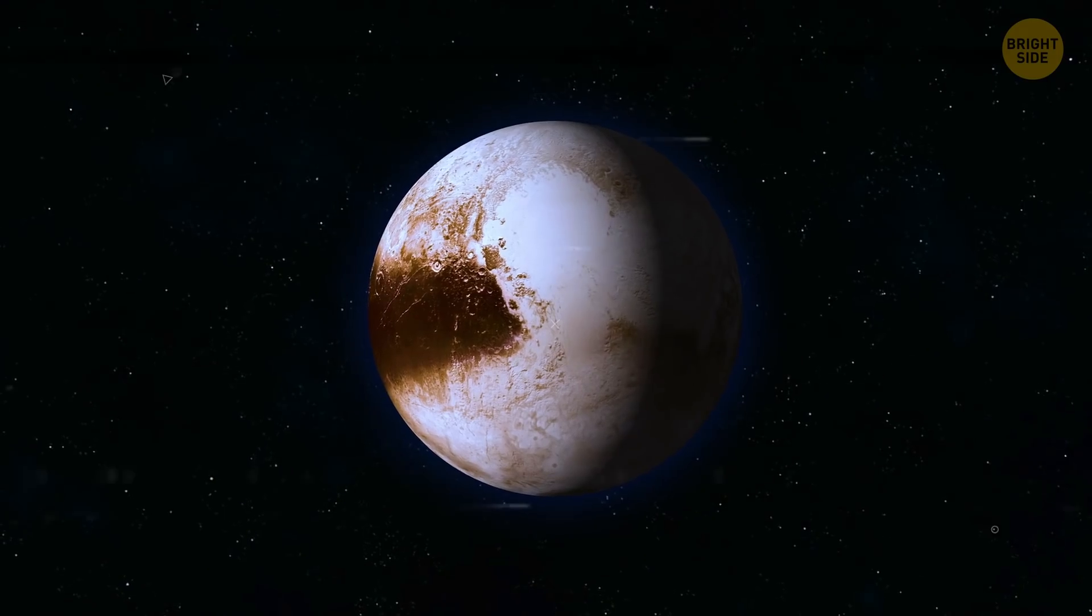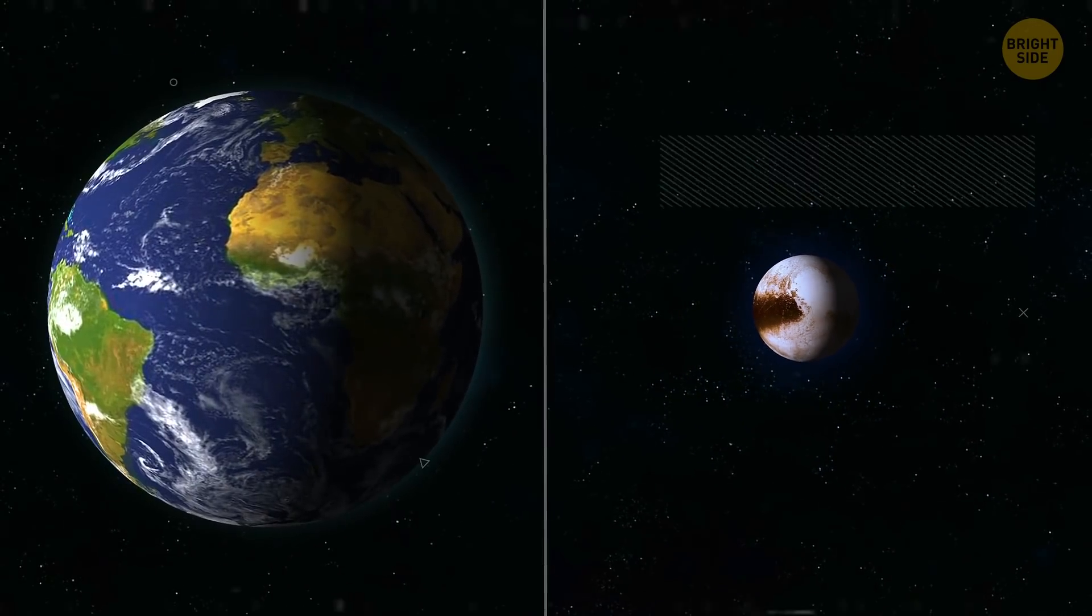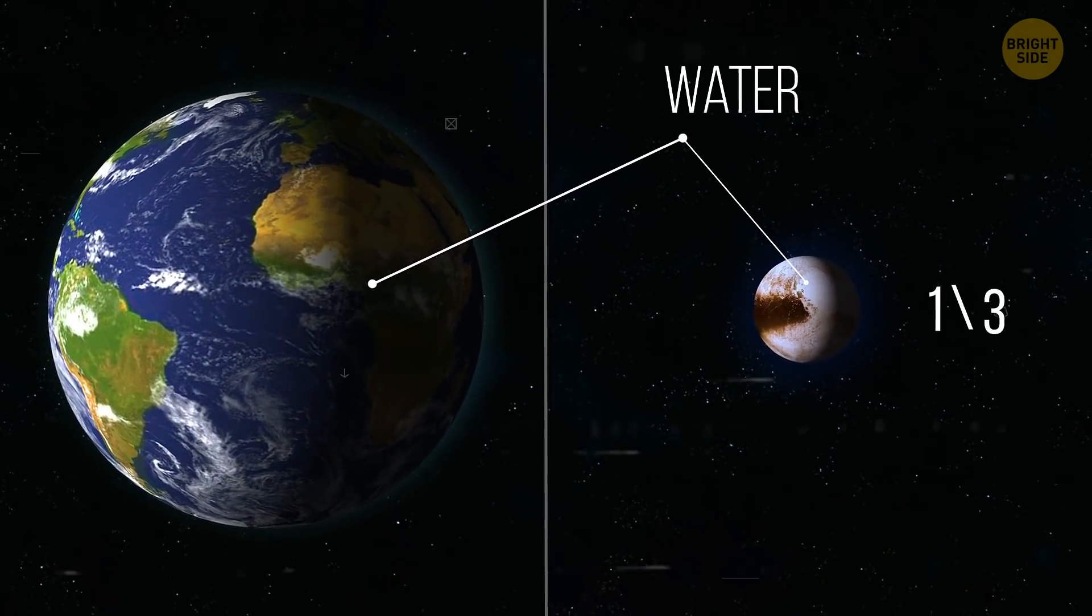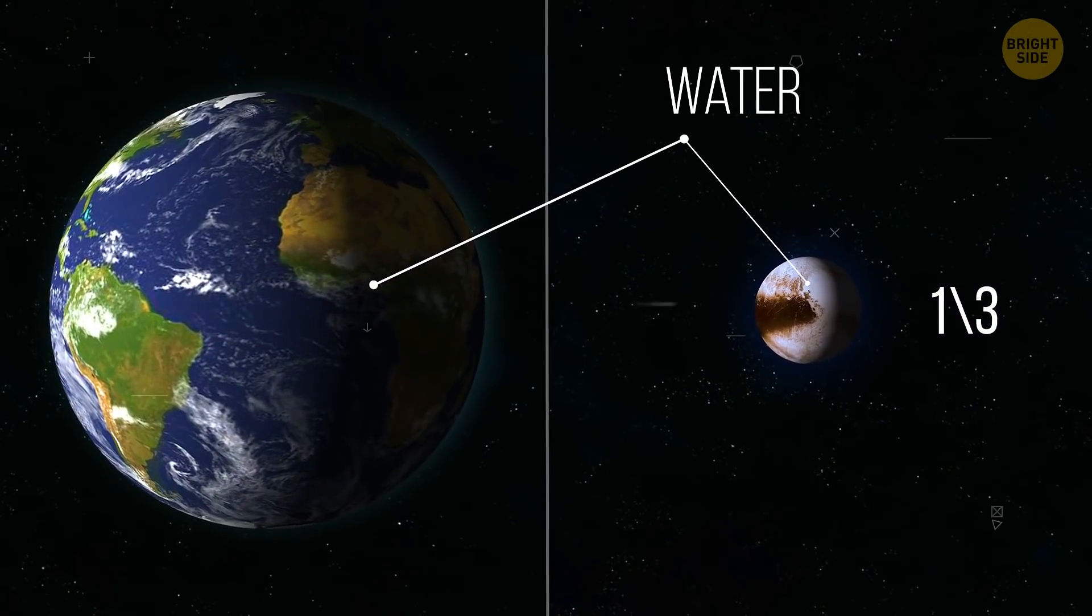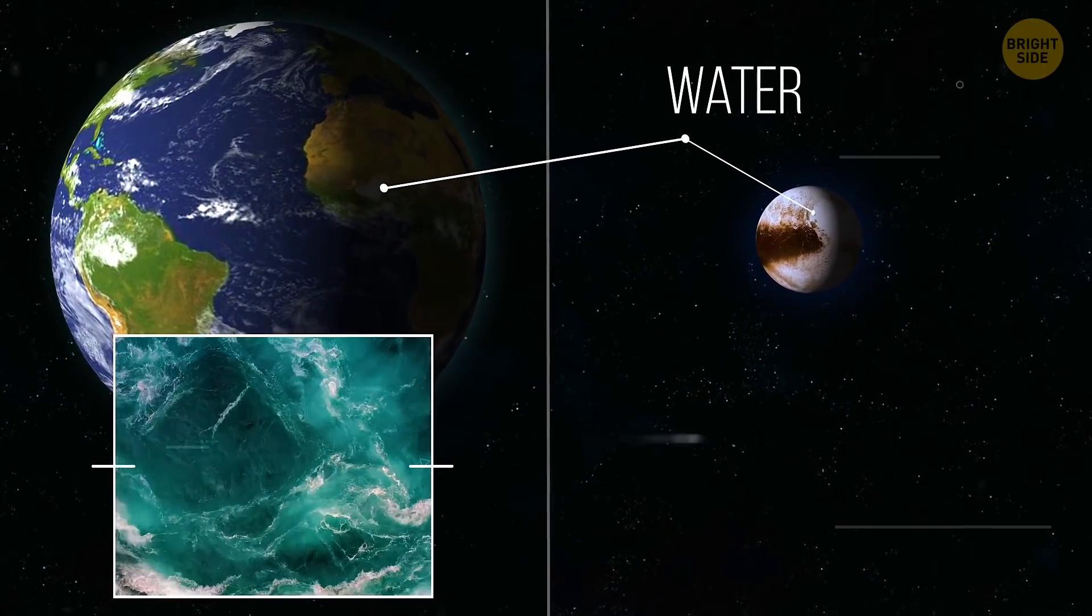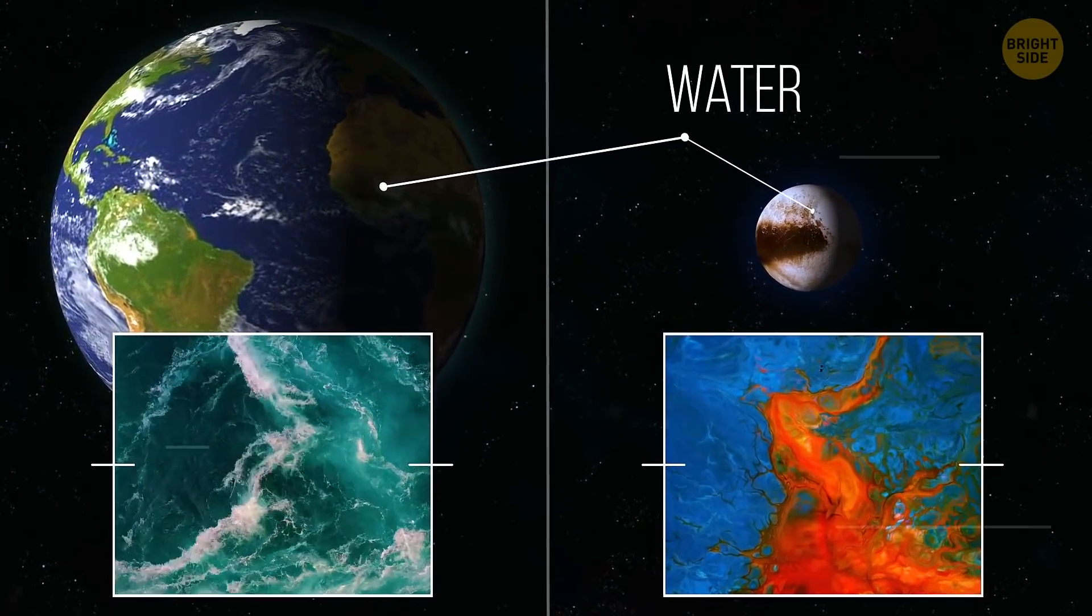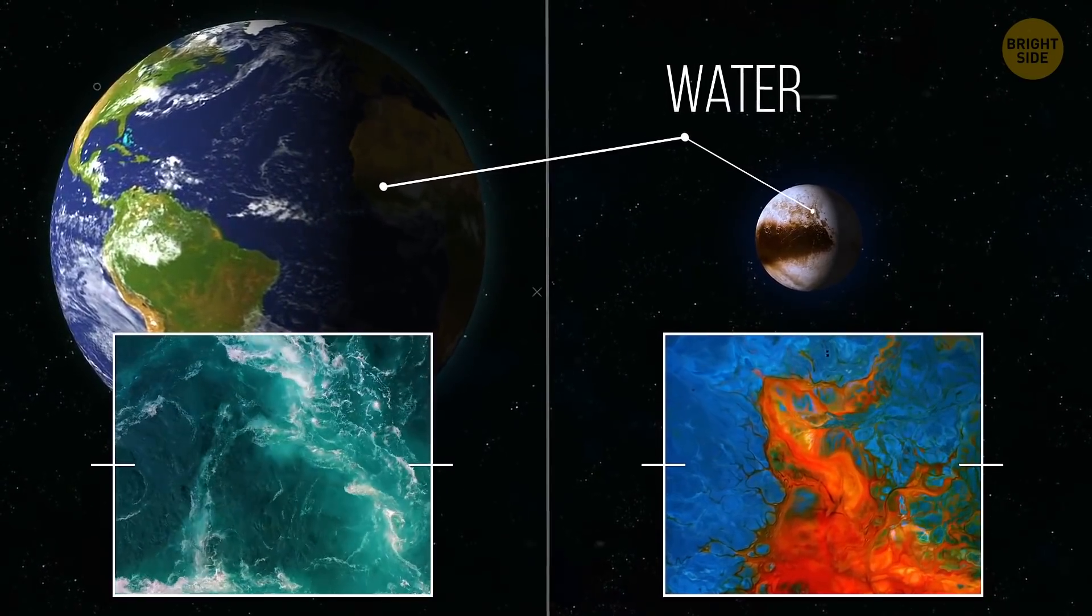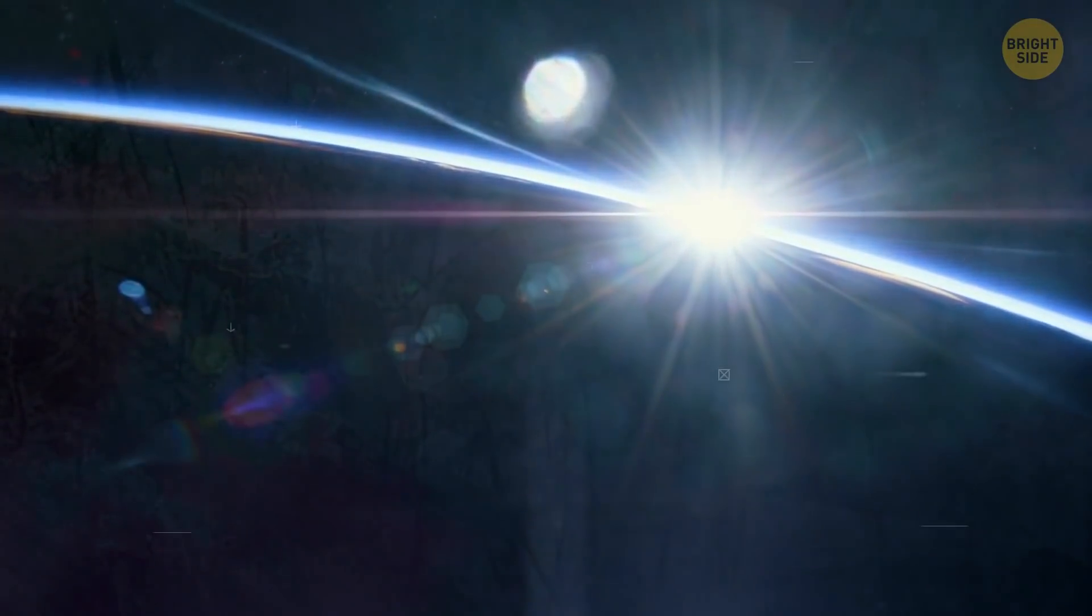Now, looks like Pluto could be more like our own planet. That, and there's water on Pluto. One-third of its surface, in fact. But, of course, it's not like Earth water. It's more like a rocky slushie. Yum. Still, no signs of life out there. At least, not for now.